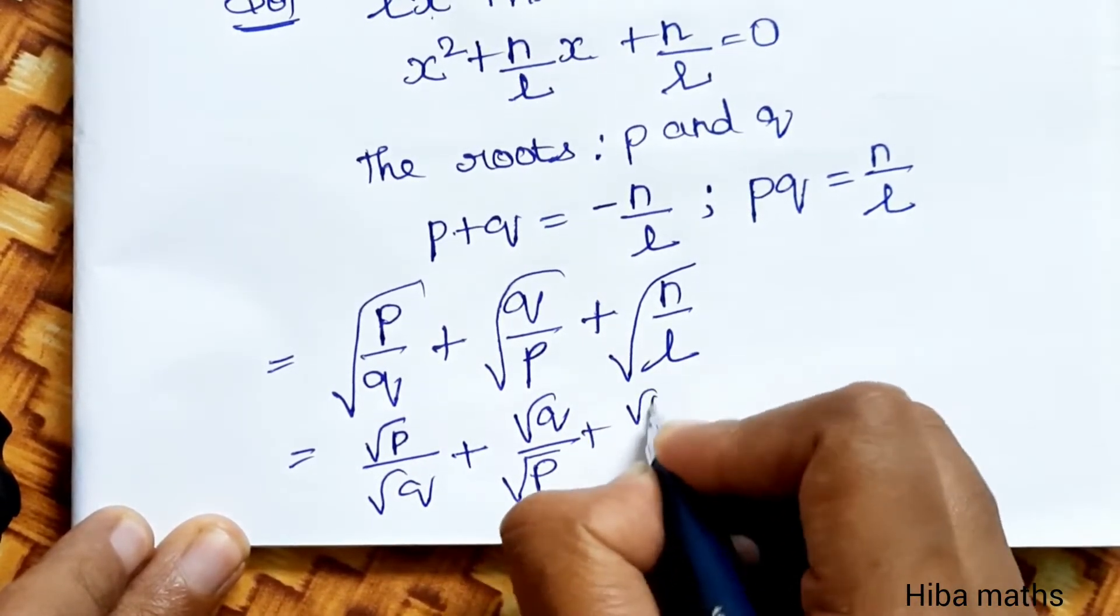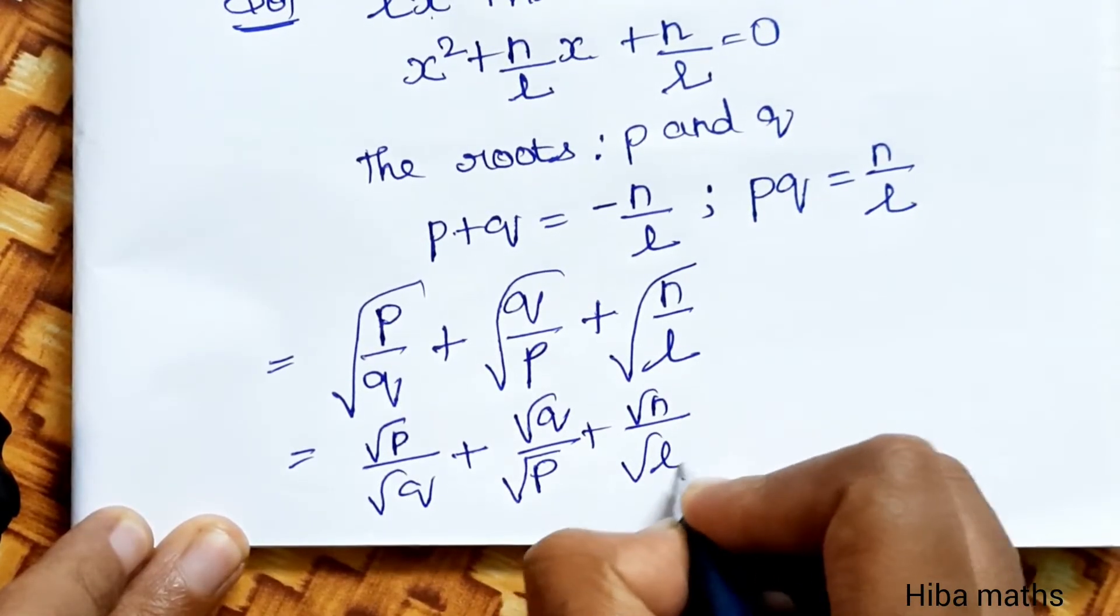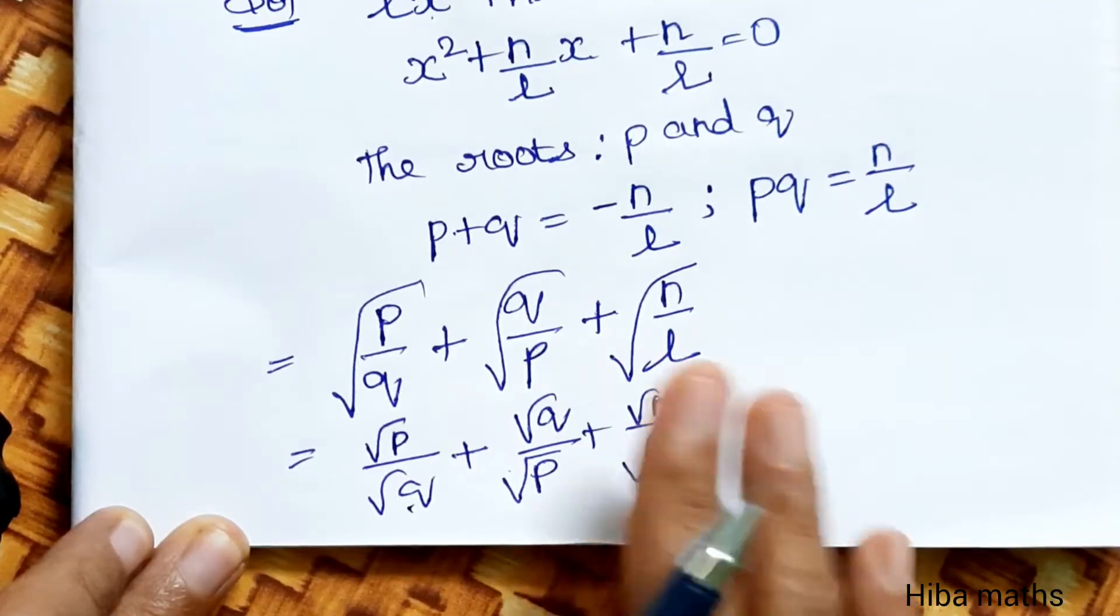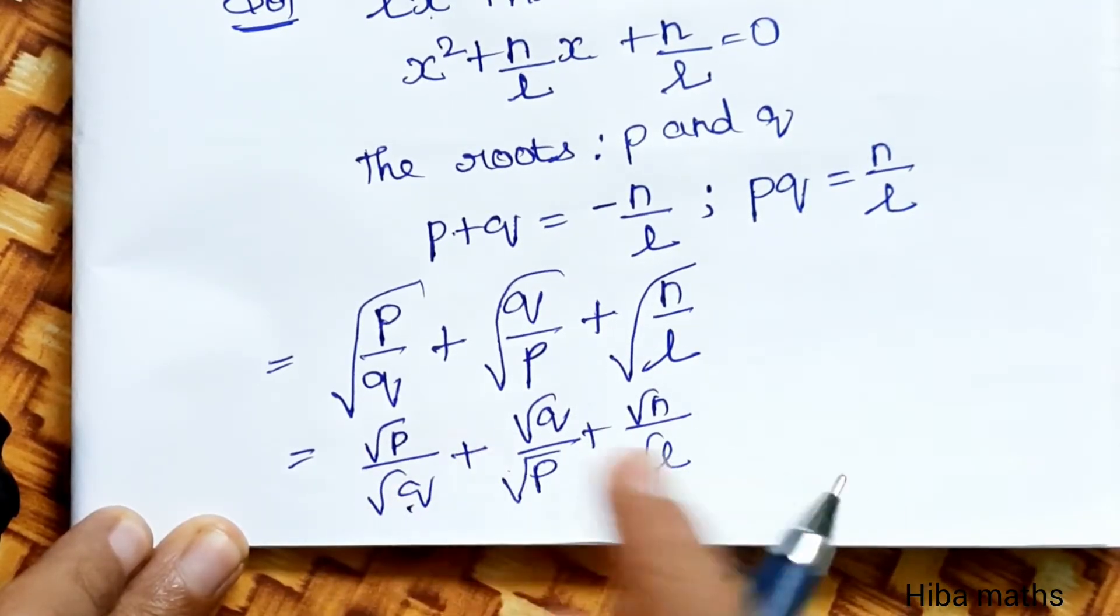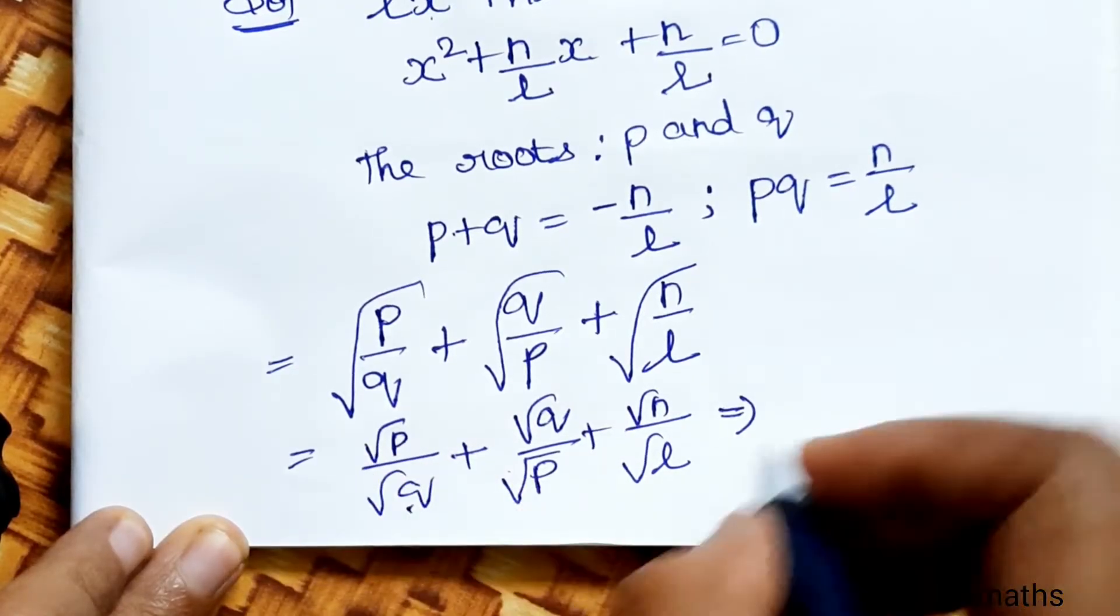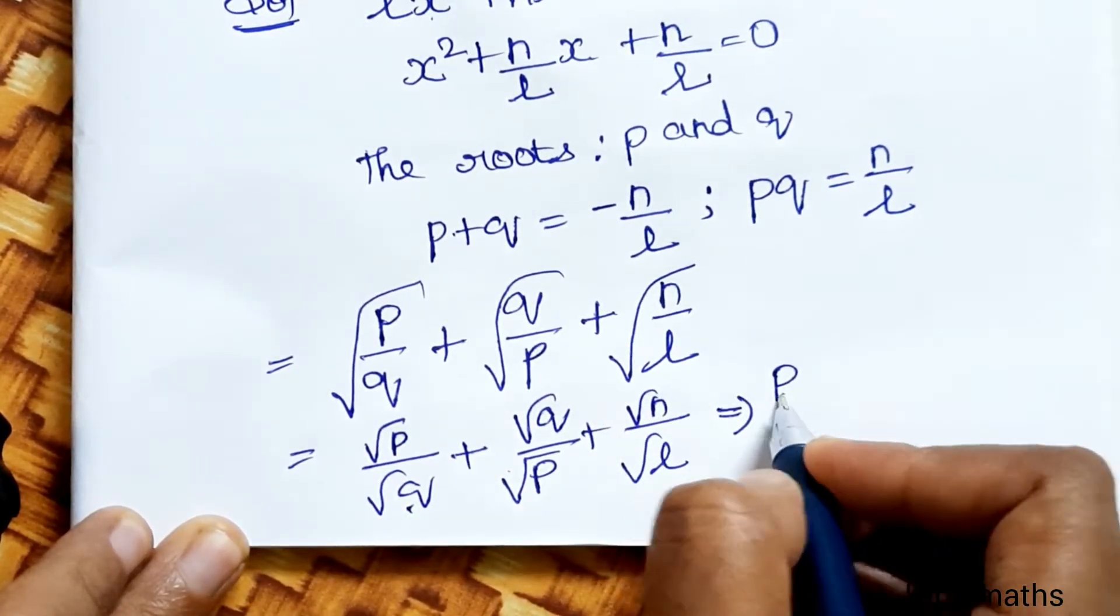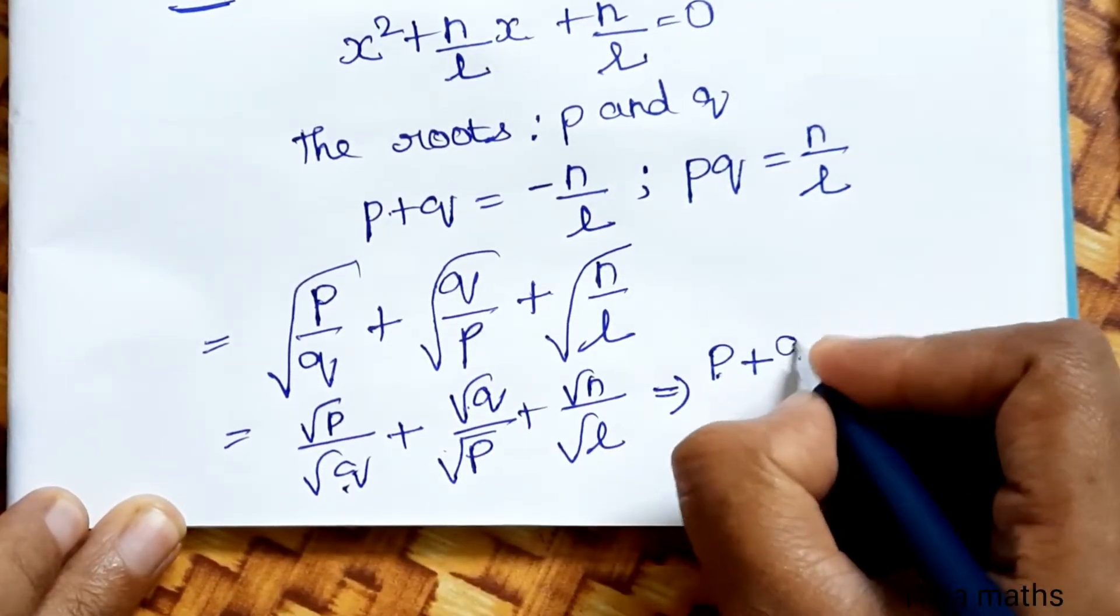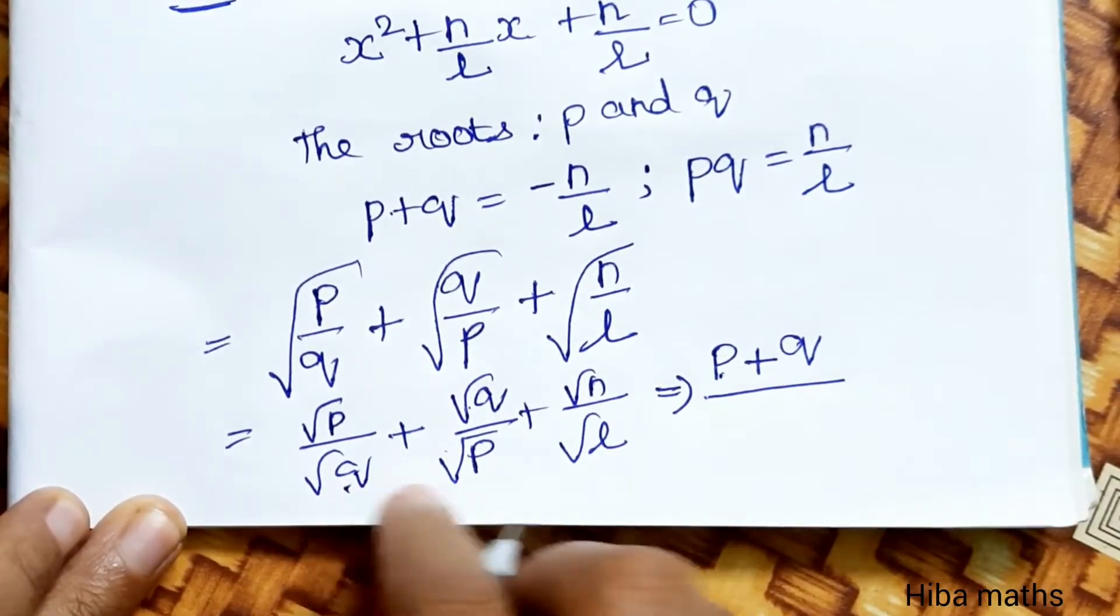If we work out, we have √p/√q + √q/√p + √(n/l). So now cross multiply the first two terms. √p into √p, root cancels, √q into √q divided by...